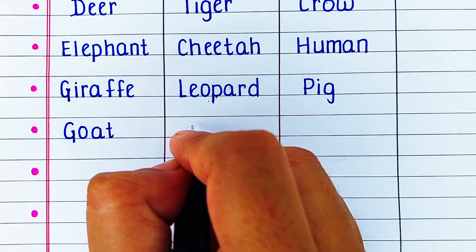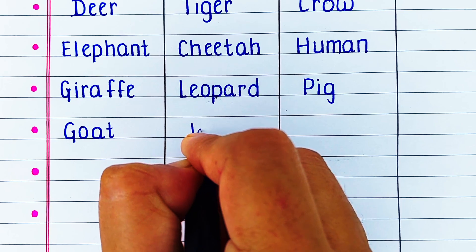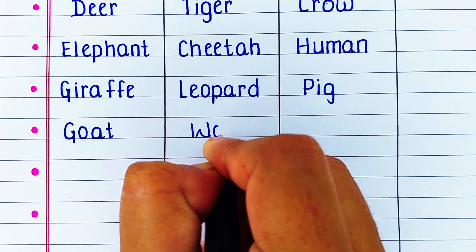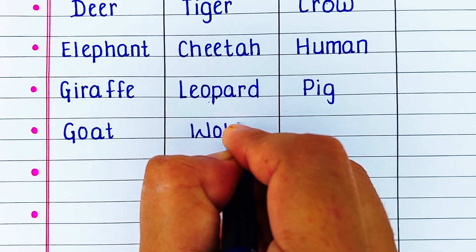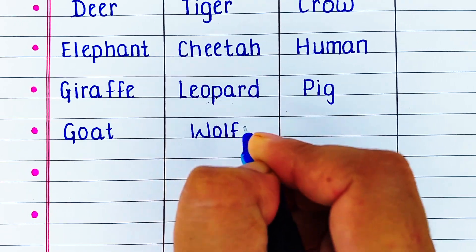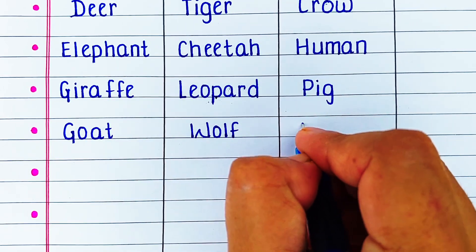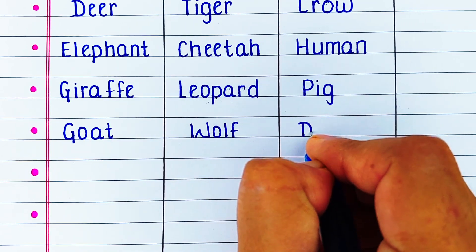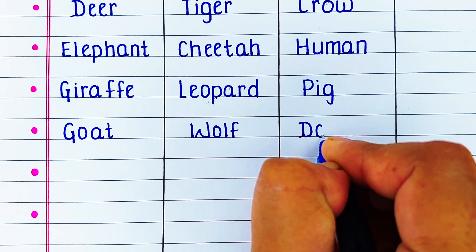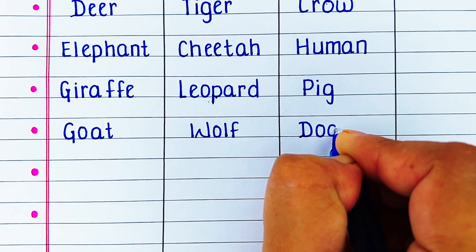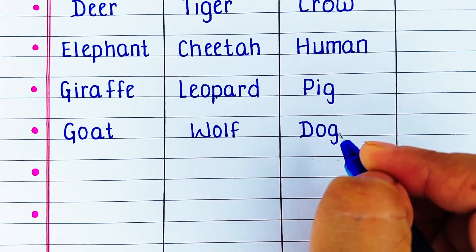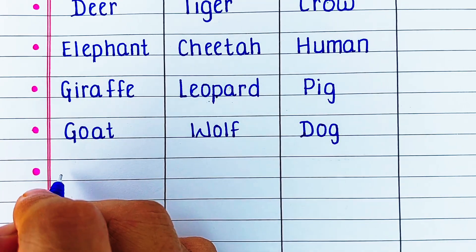Next herbivore in our list is goat. Carnivore is wolf. And omnivore is dog.